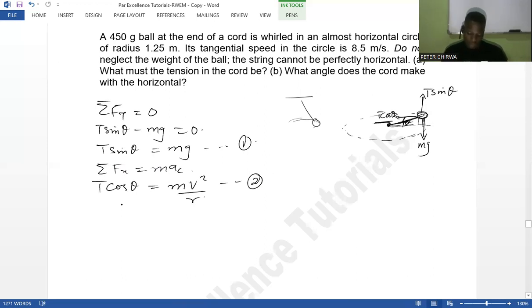What I do is divide the two equations, equation 1 by equation 2, so that I can get the angle. It's going to look like this. What I'm going to have is m and m will go, so I'm going to have tan θ being equal to rg over v².